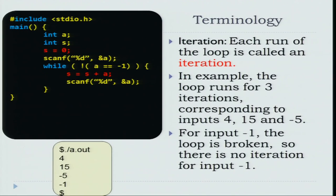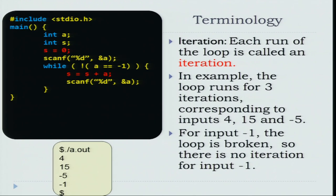We will introduce a few terms associated with the notion of a loop. Each execution of a loop is known as an iteration. In the above loop when the input was 4, 15, minus 5, minus 1, the loop runs for three iterations corresponding to the inputs 4, 15, and minus 5. For input minus 1 the loop is broken — you do not enter the loop, so you do not count an iteration corresponding to minus 1. You entered four numbers including the minus 1, and the loop executed three times, so you say that the loop had three iterations.